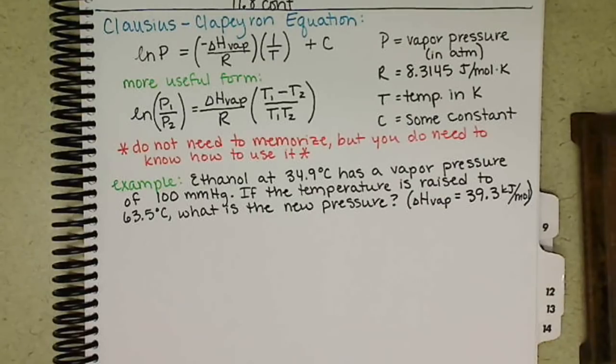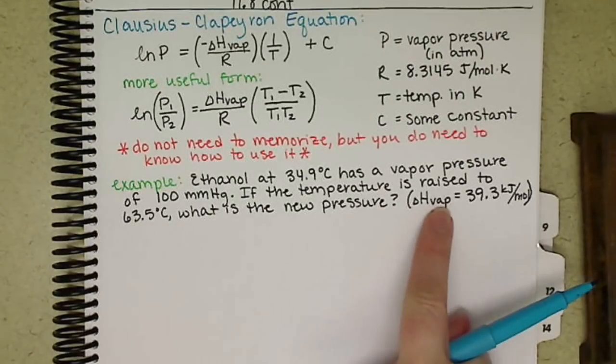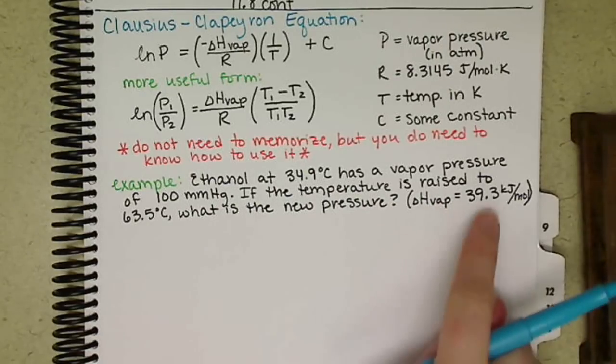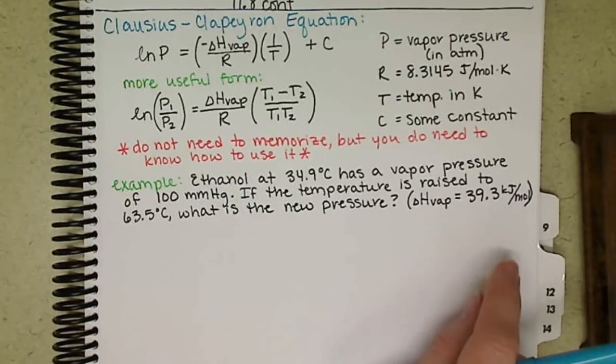All right, so ethanol at 34.9 degrees Celsius has a vapor pressure of 100 millimeters of mercury. If the temperature is raised to 63.5 degrees Celsius, what is the new pressure? And we're given a delta H of vaporization for ethanol is 39.3 kilojoules per mole.